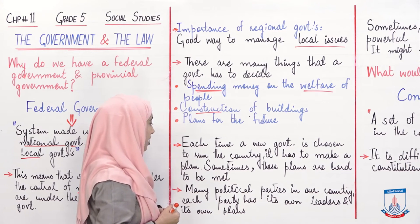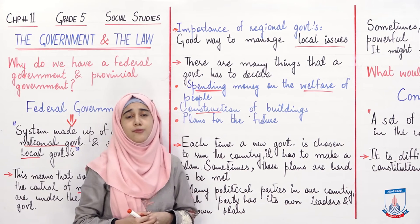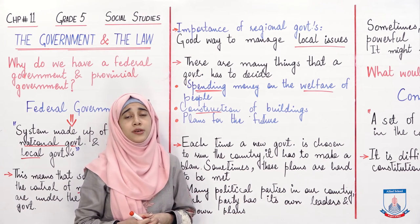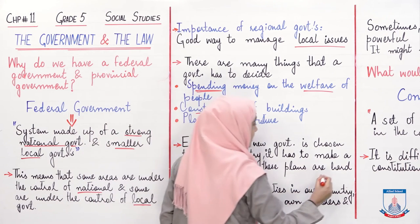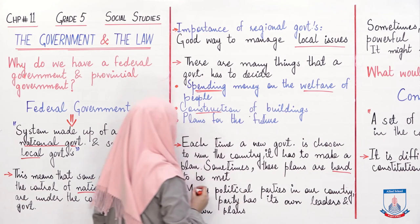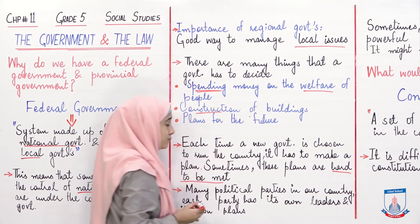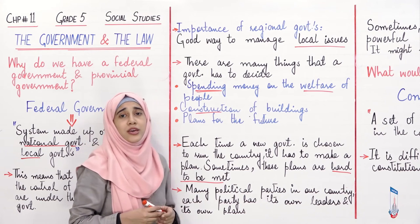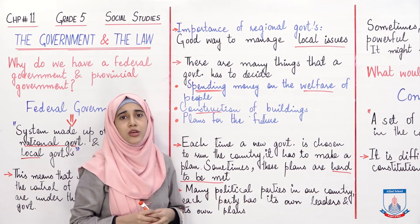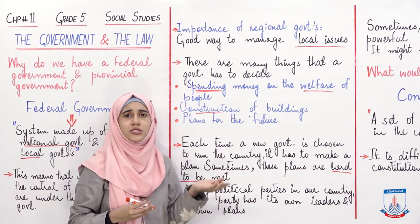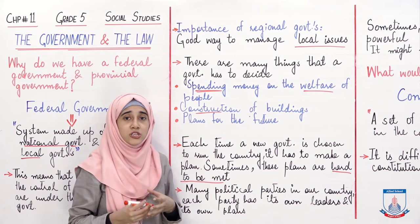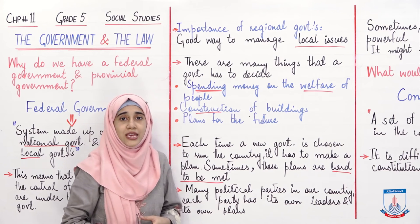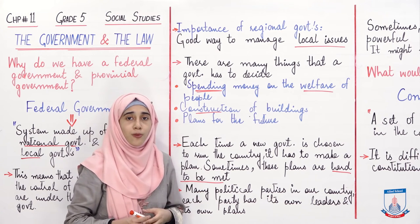Sometimes these plans are hard to be met. Kabhi kabhi aisa bhi hota hai ke jo aane wali governments hoti hain, woh wadey toh bade bade kar deti hain, lekin government mein aane ke baad those plans are hard to be met - unko poora karna bohot mushkil ho jata hai. Kyunke sirf bolna toh aasaan hota hai ke hum yeh kar denge, hum woh kar denge, lekin jab aap government mein aate ho toh actually aap ko pata lagta hai ke kahan kitni problems hain.